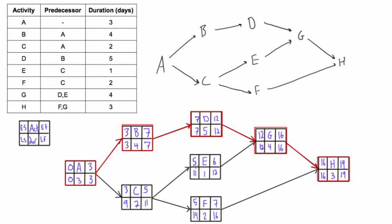If you look at C, E, or F, we can actually delay some of these for quite a long time. For example, delaying activity E by one day wouldn't affect anything — according to its late start and late finish, it's allowed to start at the latest on day eleven and finish on day twelve before it would start affecting the end date. This brings up the concept of float or slack — total float, total slack, free float, and free slack — which we will be talking about in the coming videos.